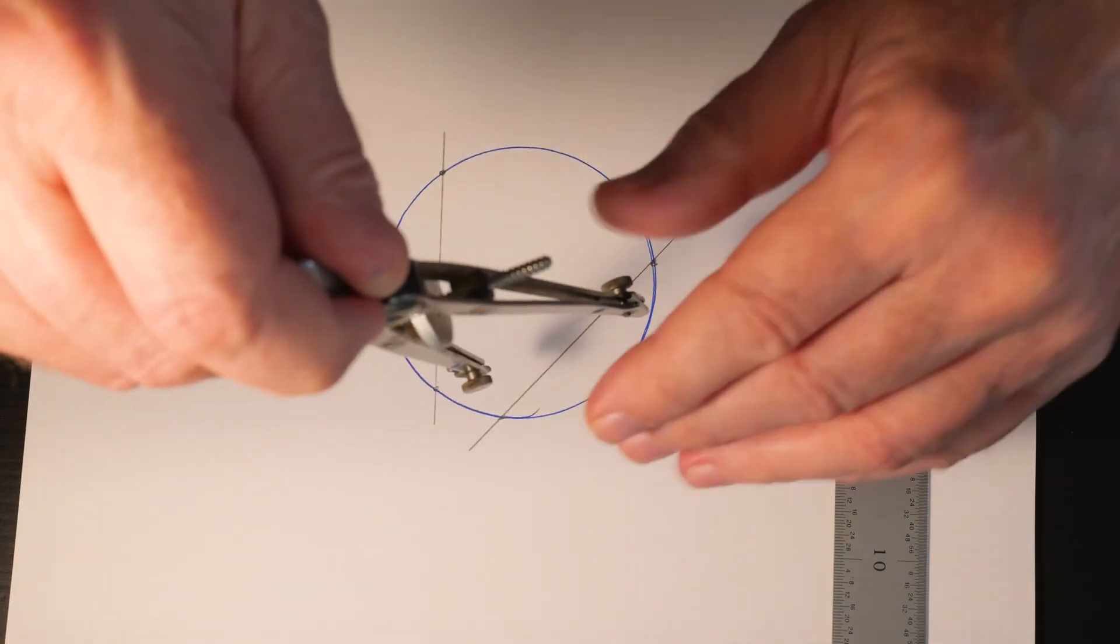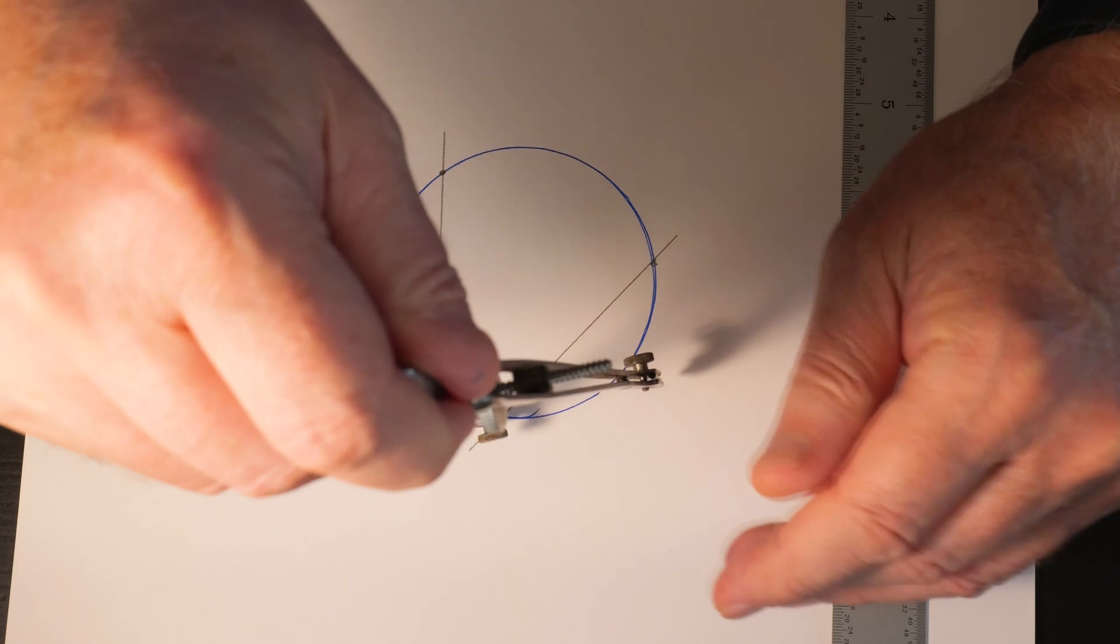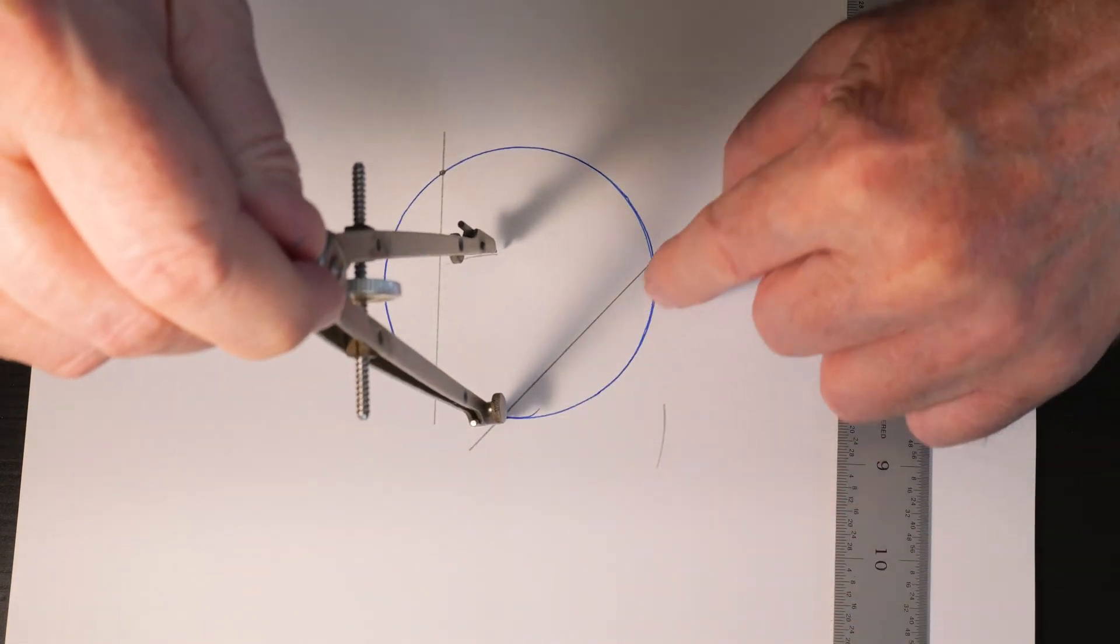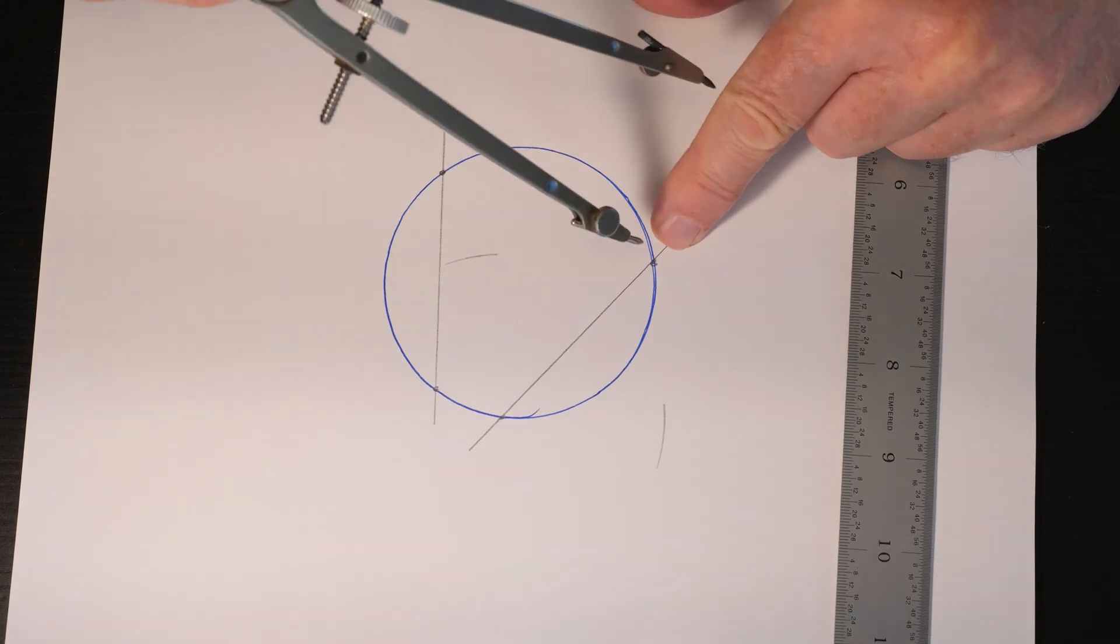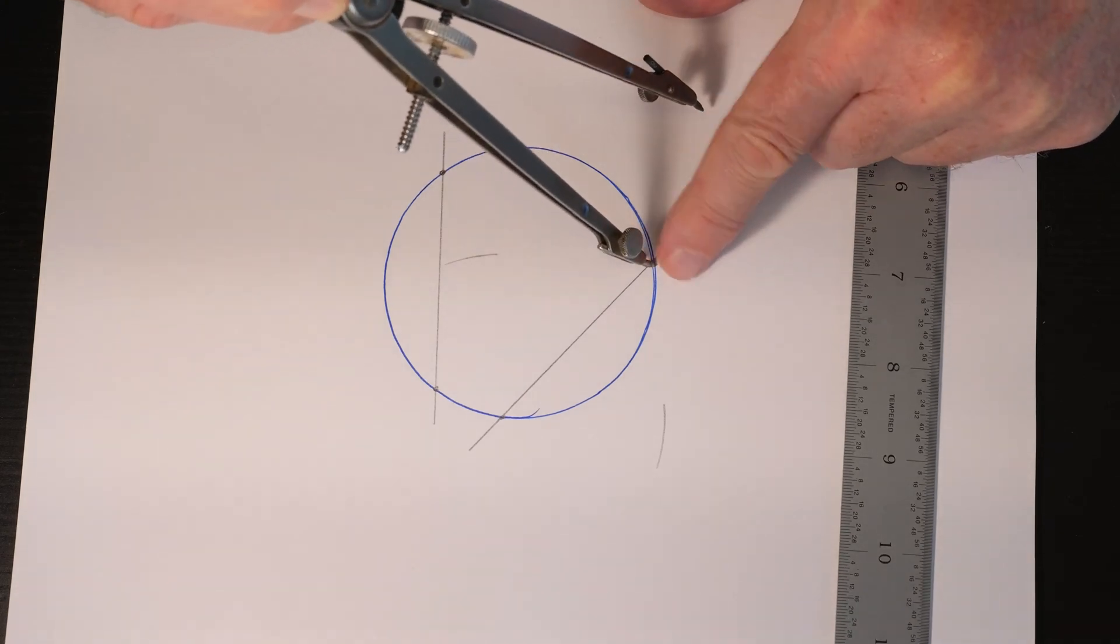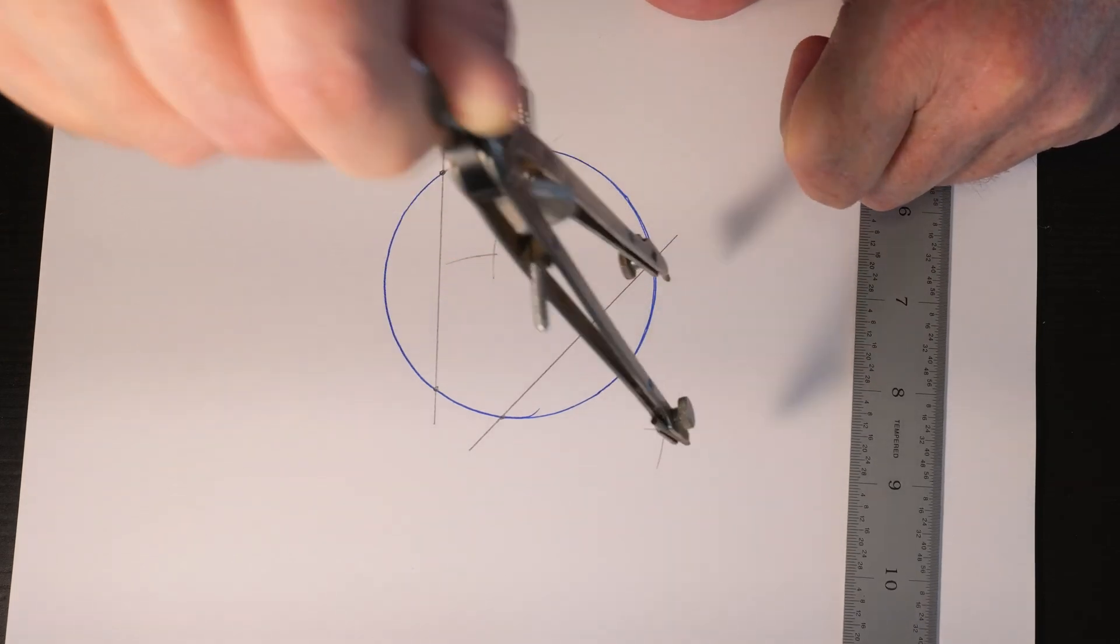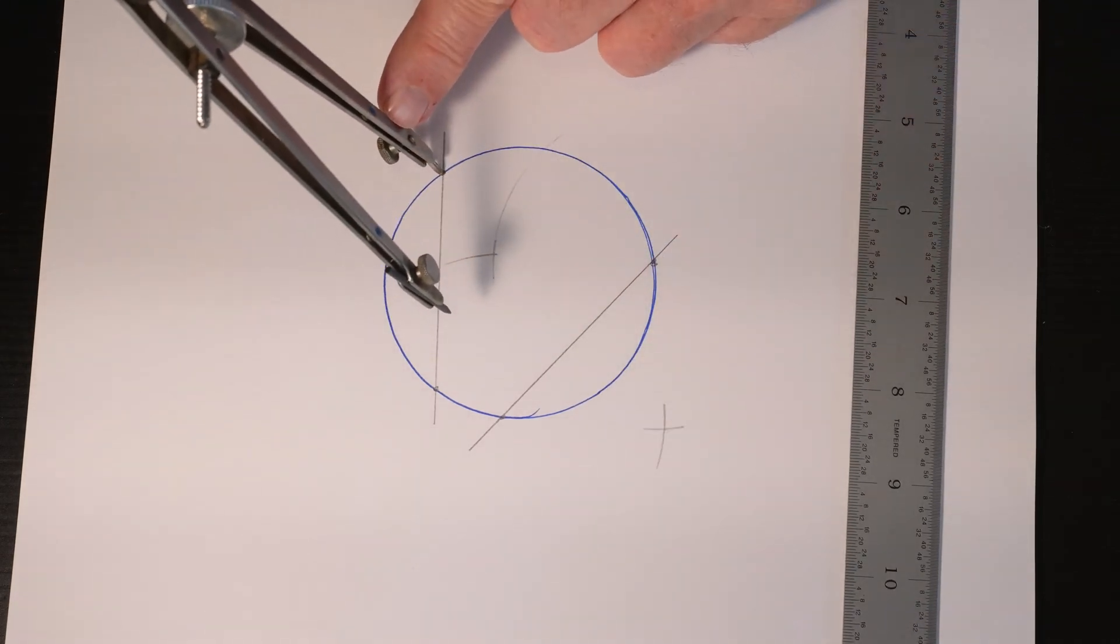All that's left to do is find the midpoint of each of those and connect them. Draw an arc there and there based off of that endpoint. We're going to come over here and do the same thing, repeat the process for this line.